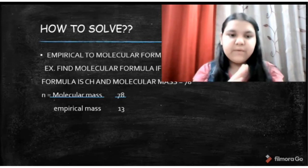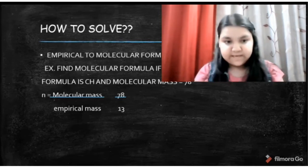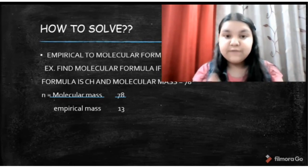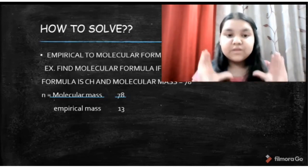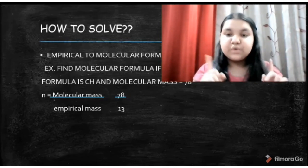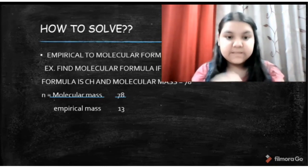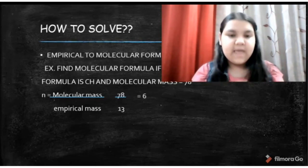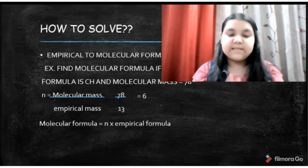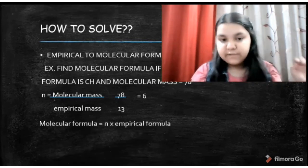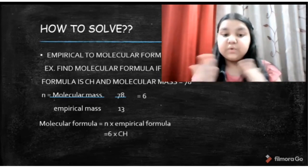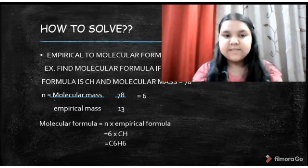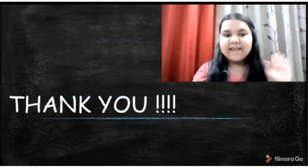The molecular mass given is 78, and the empirical formula is CH. The empirical mass is found by adding the atomic masses: carbon is 12 and hydrogen is 1, so 12 plus 1 equals 13. Dividing 78 by 13 gives n equals 6. Therefore, the molecular formula is 6 times CH, which gives us C6H6. Thank you everyone, I hope you liked it — bye bye.